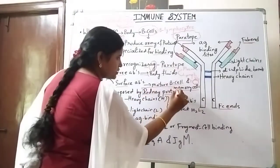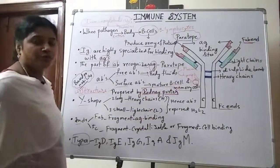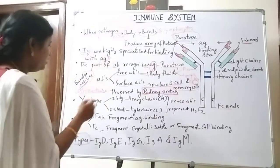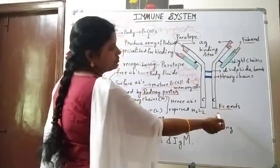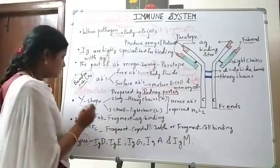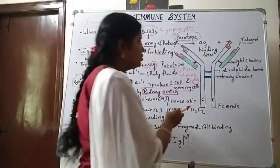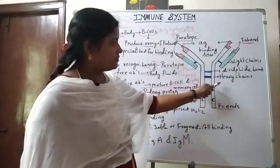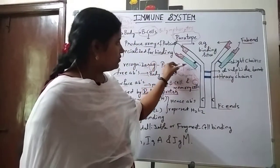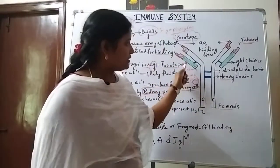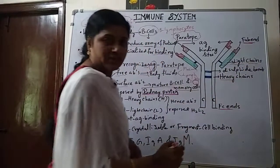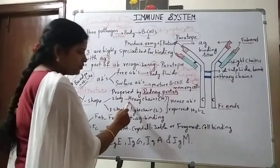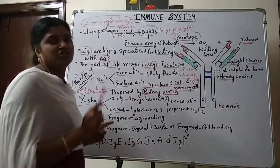Who proposed the immunoglobulin structure for the first time? Rodney Porter first observed and proposed the structure. The shape — as we can see clearly — is a Y-shaped structure. In this Y-shaped structure, there is one long chain known as heavy chains, and also one small chain known as light chains. So the Y shape contains two long chains and two small chains — two long chains are known as heavy chains and two small chains are known as light chains.